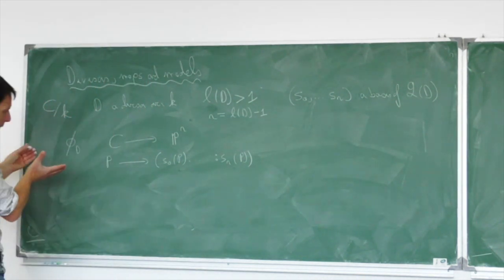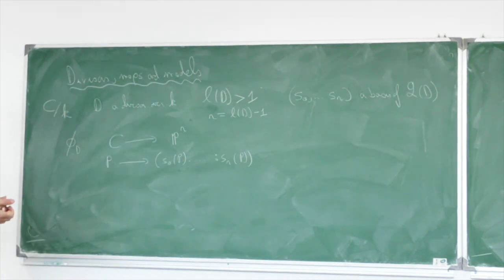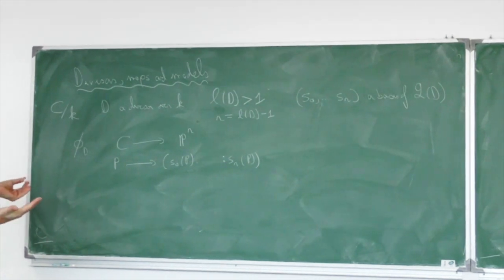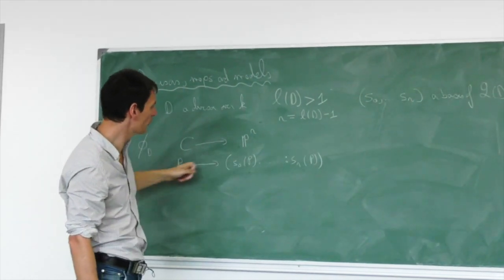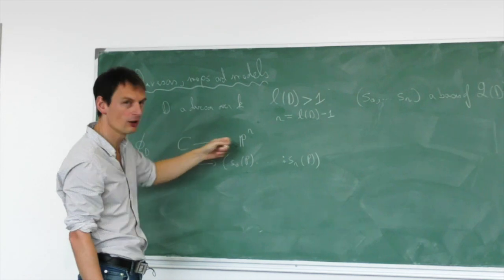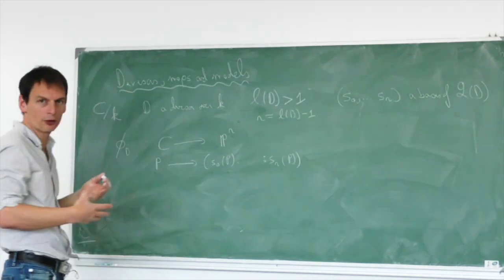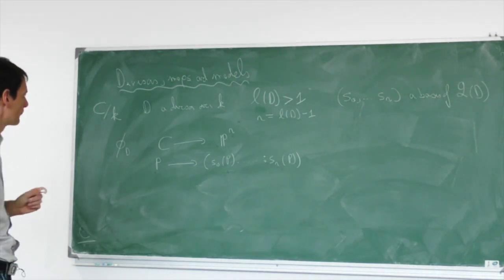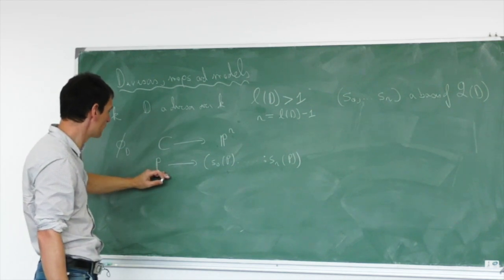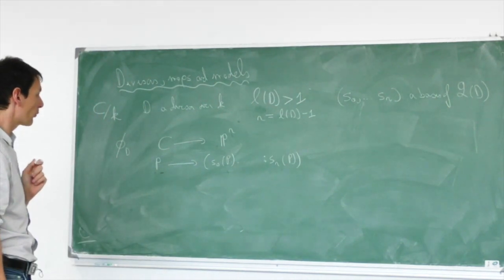We would like this morphism to give us a way to represent the curve inside P^R in the best way possible. If R = 1, we have a non-constant map from C to P^1. We know that if C is P^1 then the curve is genus 0 and we already know how to classify genus 0 curves over K-bar. We would like R to be at least 2 — we want R to be big, we want the dimension of L(D) to be big.